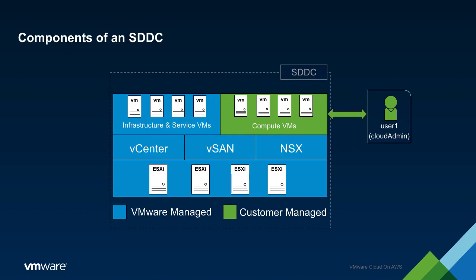The diagram below illustrates the components of an SDDC. As seen in the diagram, an SDDC consists of vCenter, vSAN, and NSX installed atop a collection of bare-metal ESXi hosts. As part of this setup, there are a number of VMs which are considered to be infrastructure level components of the SDDC. These include the vCenter server appliance as well as the NSX management and edge appliances. If additional services such as HCX are added to the SDDC, then their virtual appliances would also be included in this group.